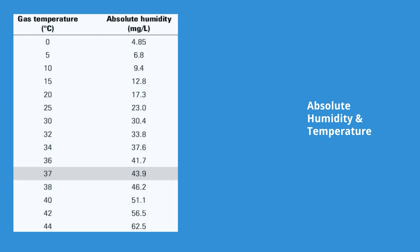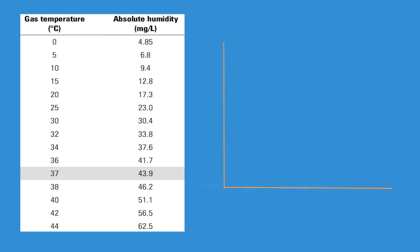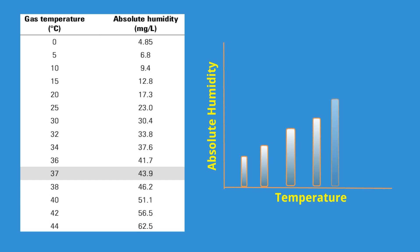Although we don't specify temperature in the definition, there is a relationship between gas temperature and absolute humidity. From a table, at 0 degrees centigrade the absolute humidity is 4.85 milligrams per liter, at normal body temperature of 37 degrees centigrade it is 43.9 milligrams per liter, and at an extreme condition of 44 degrees centigrade it is 62.5 milligrams per liter. A graph of gas temperature versus absolute humidity shows that absolute humidity gradually increases with temperature.